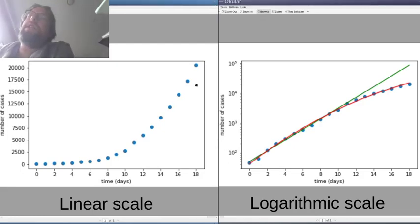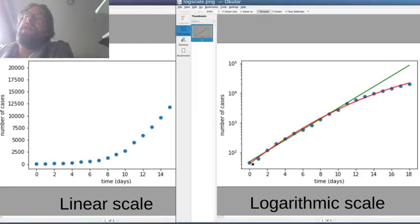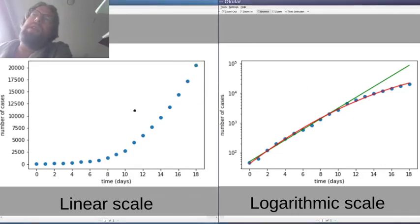Whereas on the right hand side in this logarithmic scale you see that initially there is this exponential increase in the number of cases, which is shown with the green line. Then after a while while the Chinese government is starting to take some measures against the virus, then the data points are starting to veer away from this exponential increase. And so you see that this logarithmic scale is showing this much more clearly than this linear scale on the left hand side.